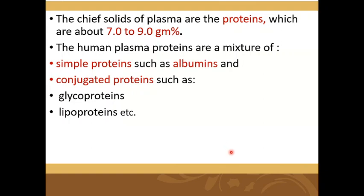The chief solids of plasma are the proteins, which are about 7 to 9 gram percent. Human plasma proteins are a mixture of simple proteins such as albumins and conjugated proteins such as glycoproteins and lipoproteins. So human plasma proteins contain both simple proteins as well as conjugated proteins.